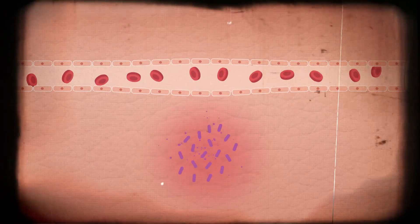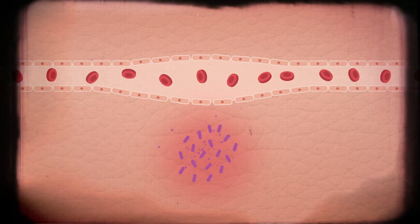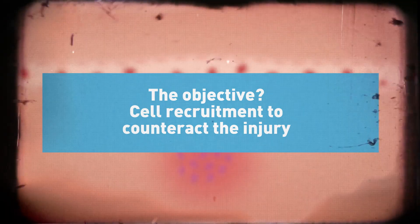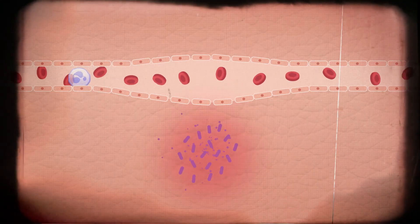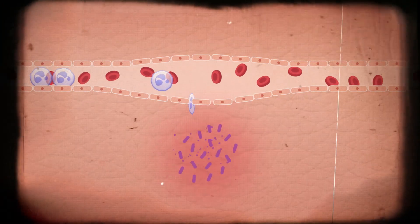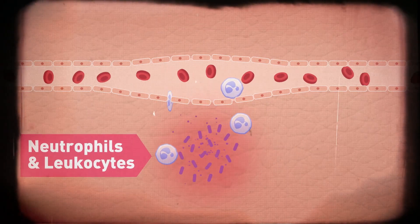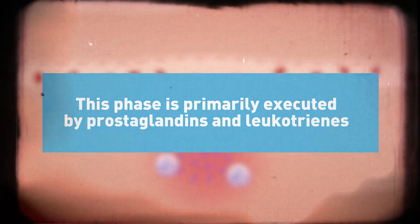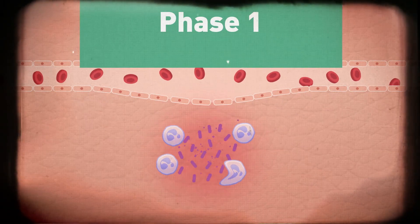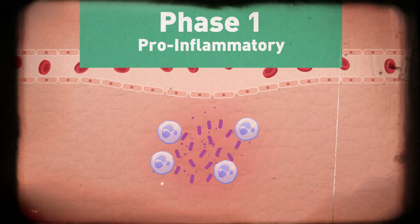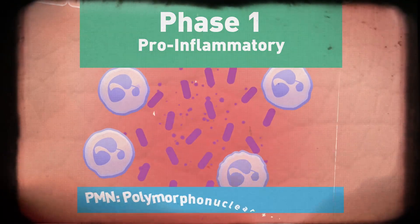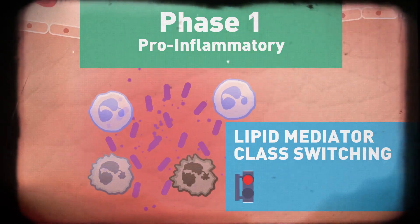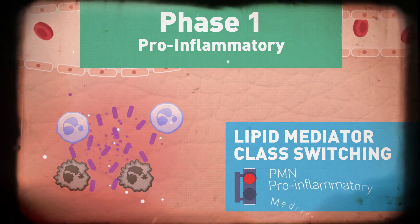Let's now analyze the steps of the inflammatory response and the relationship to SPMs. Upon injury or harm to cells, the body releases chemicals that trigger an immune response, dilating blood vessels and recruiting cells from the immune system — immediately releasing neutrophils and leukocytes to counteract the injury. Mediation of this phase is primarily executed by omega-6 arachidonic acid lipid mediators: prostaglandins and leukotrienes. This first phase is referenced as pro-inflammatory, resulting in recruitment of neutrophils and PMNs targeting the initial action responsible for the injury.